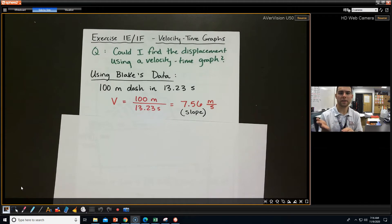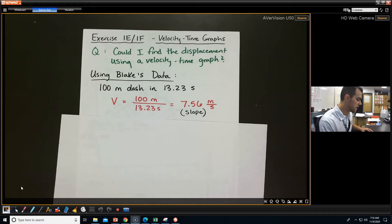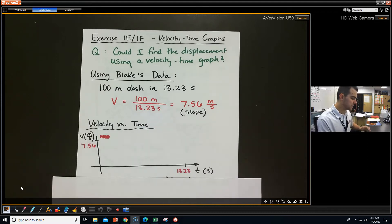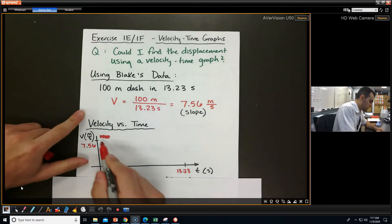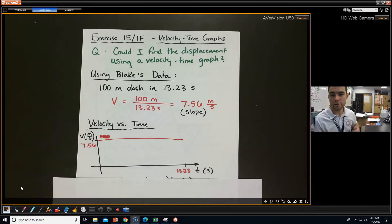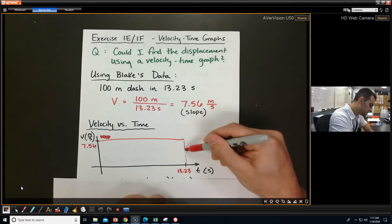It's a constant speed — we can assume it's constant because he's not really changing his speed. So our velocity time graph, if we look at velocity versus time, this is just going to look like a straight line going across. Not all of our velocity time graphs are going to look like that, but for this case it does.